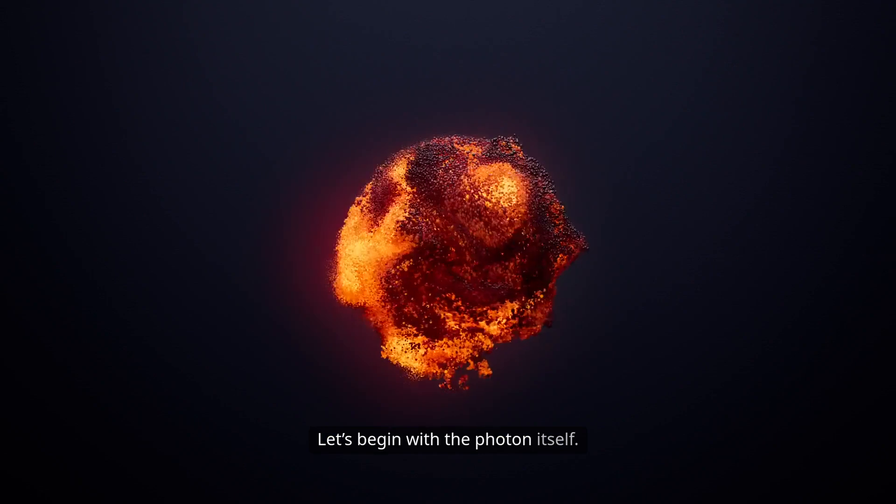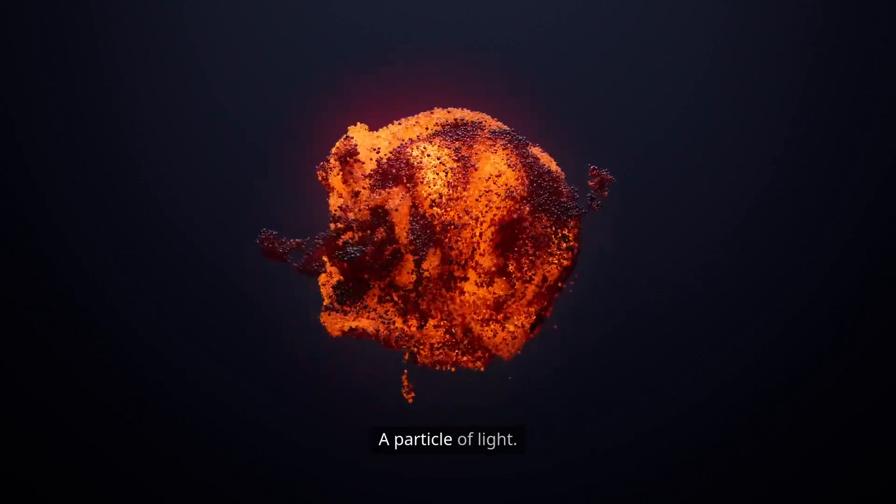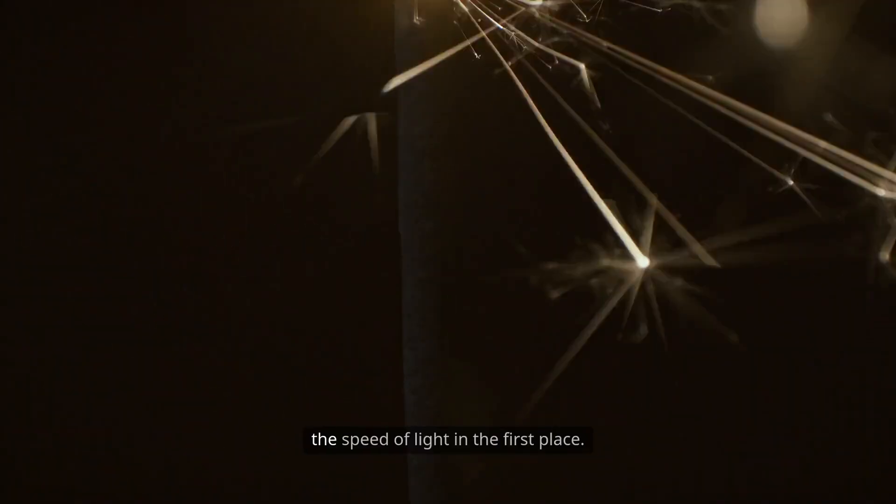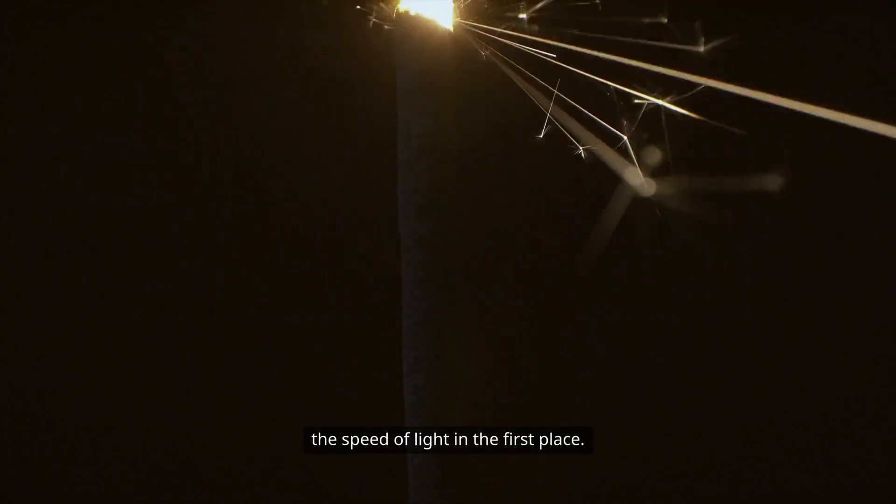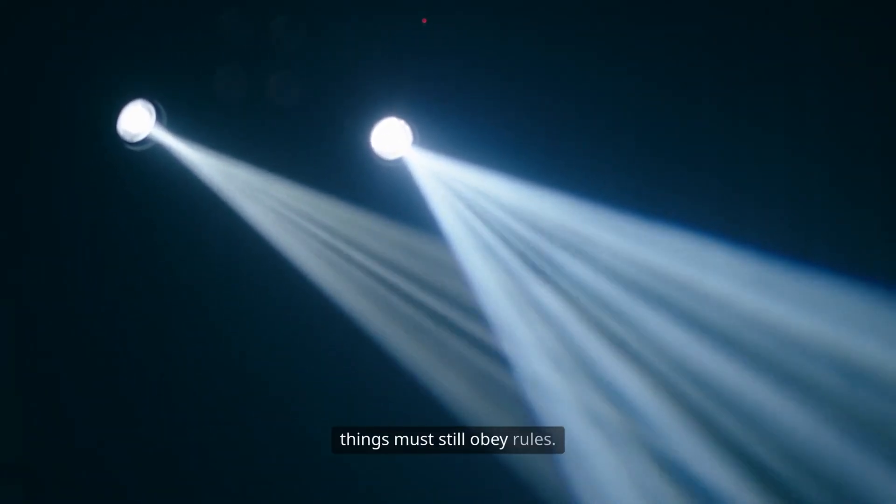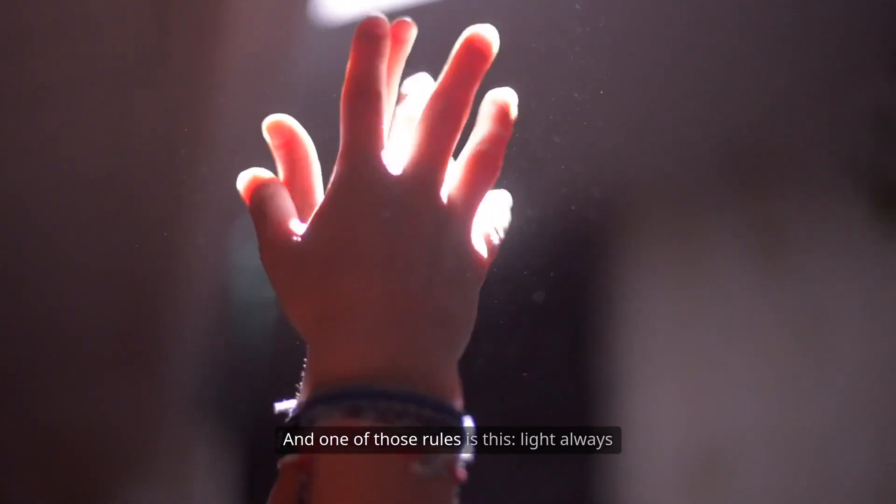Let's begin with the photon itself, a particle of light. Unlike an electron or a proton, it has no mass. That's why it's allowed to travel at the speed of light in the first place. But in physics, even massless things must still obey rules.